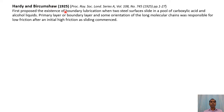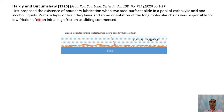Hardy and Berkamsaw conducted experiments in lubricated sliding. They found that in addition to viscosity, boundary lubrication was another factor. For steel surfaces, a boundary lubricant is formed on the surface consisting of organic molecules. They conducted experiments with carboxylic acid and alcohol liquids. A primary or boundary layer formed by the orientation of long molecular chains was responsible for low friction after an initial high friction as sliding commenced. These molecular chains have affinity to bond with the steel surface and form a boundary layer. This was the very first work in which boundary layer lubrication was recognized.